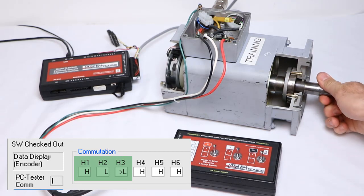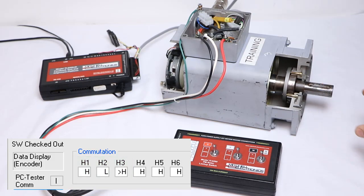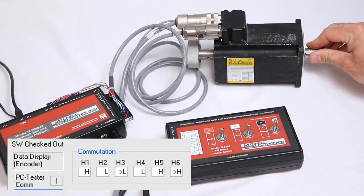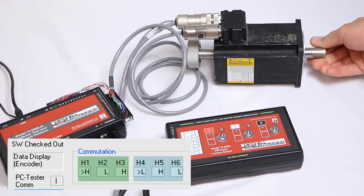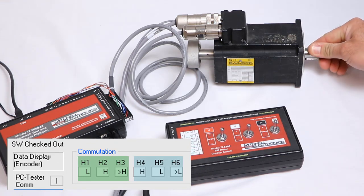The caret symbols show the last signal to have changed. If the commutation feedback has complement lines, then make sure that all six signals are changing, and that H4 through six are exactly opposite of H1 through 3.